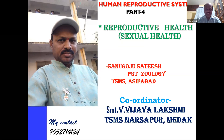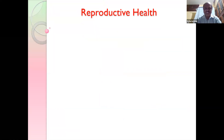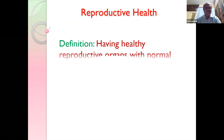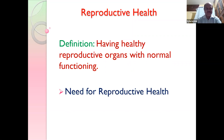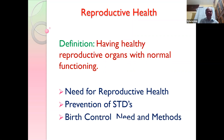Reproductive health is the sexual health of an individual. The definition given by WHO and our textbook is: having healthy reproductive organs with normal functioning. The comprehensive WHO definition states that reproductive health is a state of complete well-being of individuals in physical, functional, emotional, behavioral, and social aspects of reproductive health.